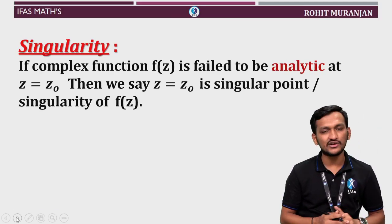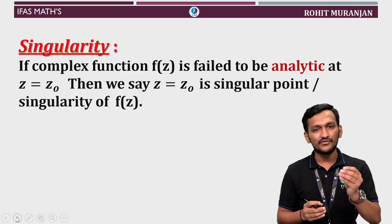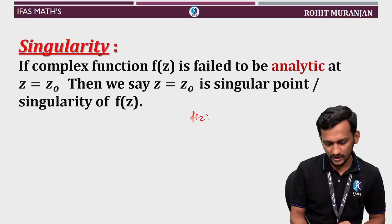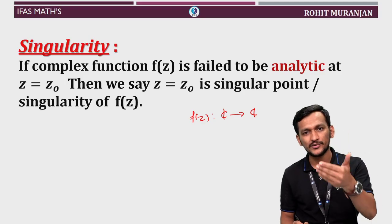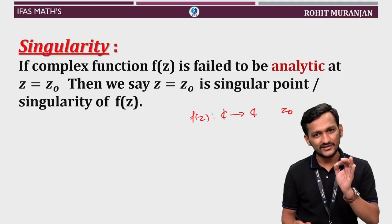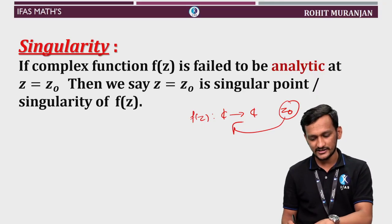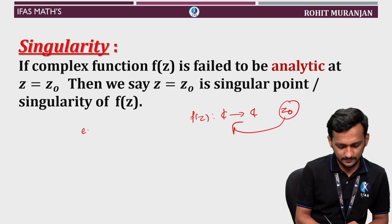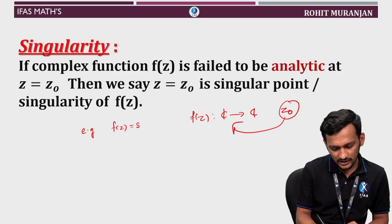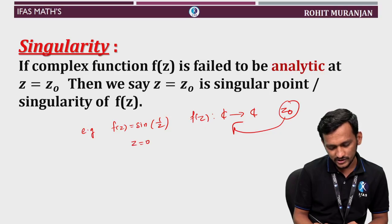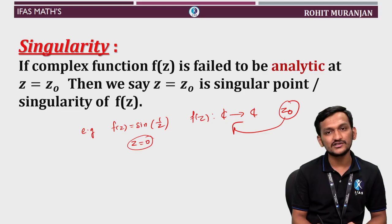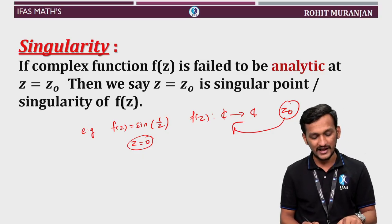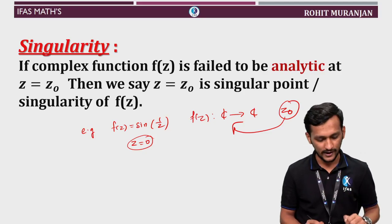We'll start with the definition of singularity. What is singularity? In simpler language, we can say function f(z) is said to fail to be analytic. Suppose I have some function f(z) which is defined on C. If this function fails to be analytic at a particular point, let's say z₀, then we say z₀ is the singularity of f(z). For example, if I define this function f(z) = sin(1/z) and consider z = 0, you will see at this point function f(z) is not analytic — in fact, it is not even defined at that point. So f(z) has a singularity at z₀ = 0.